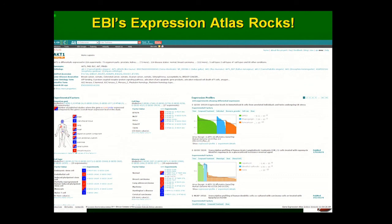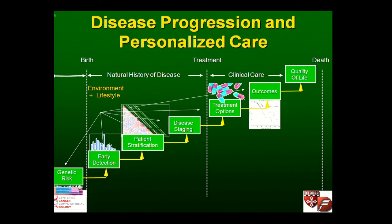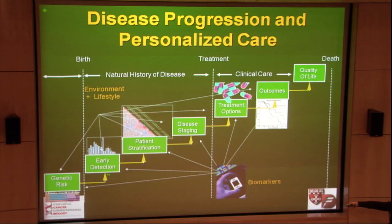Ultimately what we'd like to do is take the data and make sense of them. A big part of what the availability of arrays has done is really driven an effort to understand fundamental biology. I work at Dana-Farber, a cancer institute, so a big part of our work is focused on understanding the progression of disease — using genomics and genomic technologies to look at a range of applications: understanding a person's genetic risk, detecting disease early, stratifying patients, staging disease, selecting the best treatment options to improve outcome and give people a better quality of life.